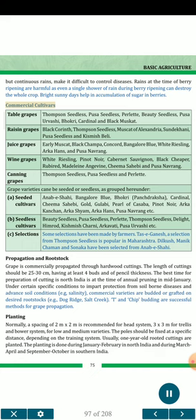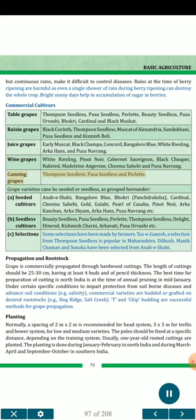Commercial Cultivars. Table grapes: Thompson Seedless, Pusa Seedless, Palit, Beauty Seedless, Pusa Urvashi, Bodhi, Cardinal and Black Muscat. Raisin grapes: Black Corinth, Thompson Seedless, Muscat of Alexandria, Sundekhani, Pusa Seedless and Kishmish Beli. Juice grapes: Early Muscat, Black Champa, Concorde, Bangalore Blue, White Riesling, Arka Hans and Pusa Navrang. Wine grapes: White Riesling, Pinot Noir, Cabernet Sauvignon, Black Cheeper, Rue Bird, Madeleine Angevine, Chima Sahabi and Pusa Navrang. Canning grapes: Thompson Seedless, Pusa Seedless and Palit. Seeded cultivars: Anab-e-Shahi, Bangalore Blue, Bodhi, Panch Draksha, Cardinal, Chima Sahabi, Gold, Gulabi, Pearl of Casaba, Pinot Noir, Arka Kanchan, Arka Shyam, Arka Hans, Pusa Navrang, etc. Seedless cultivars: Beauty Seedless, Pusa Seedless, Palit, Thompson Seedless, Delight, Himrod, Kishmish Charni, Akwati, Pusa Urvashi, etc. Selections: Tas-A-Ganesh (a selection from Thompson Seedless) is popular in Maharashtra; Tilkush, Manak Chaman and Sonaka have been selected from Anab-e-Shahi.